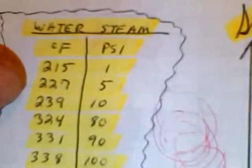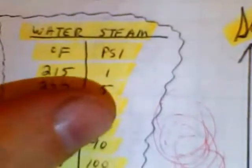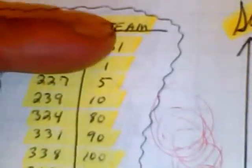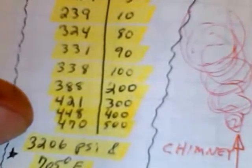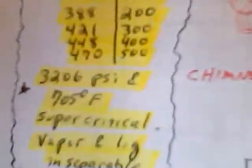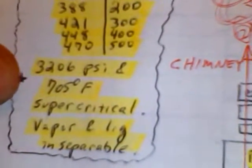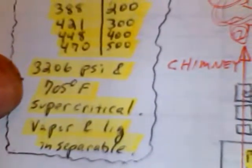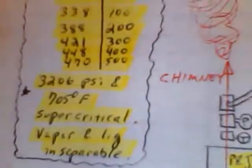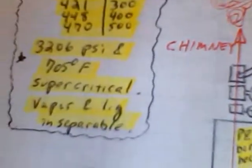I have the water and water temperature. Look at your different water temperature and your steam pressure values. Here's 215, you have 1 psi on water. Take it all the way down to 470 Fahrenheit, you're about 500 psi on water. So it's very dangerous to be working with steam, and that's on water. At 3206 psi and 705 degrees Fahrenheit, that's where you're super critical on water. The vapor and liquid are inseparable at that point.